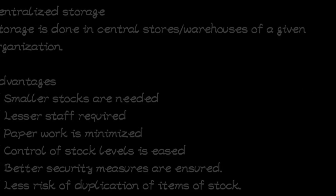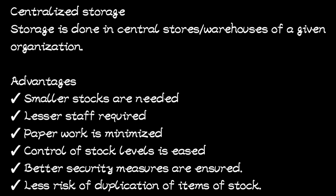Let's look at the types of storage systems. There are three: centralized stores, decentralized, and impressed stores. We are going to look at them one by one, starting with centralized storage. As the name suggests, storage is done in central stores or warehouses of a given organization. For example, if an organization has 10 branches, the store will be at one branch and every other branch that needs materials gets them from that one particular branch.